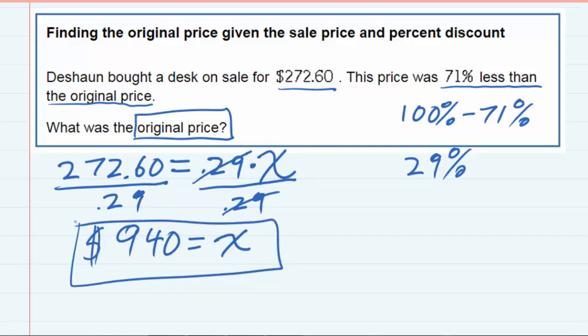And we just want to check and make sure that makes sense. Deshawn bought his desk on sale for $272. It was 71% off of the original price. So the original price being $940, that would be a good deal. That would be 71% off of the full price.